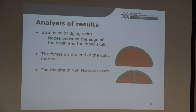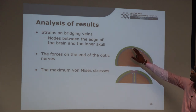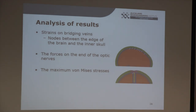When analyzing results, the bridging vein strains were obtained using a set of nodes on the outer surface of the skull and a set on the outer and inner surfaces of the brain. They weren't explicitly modelled — I was tracking the displacement of each of those nodes throughout the experiment and figuring out the strains between them. The forces at the end of the optic nerve were also calculated, as were the maximum von Mises stresses.